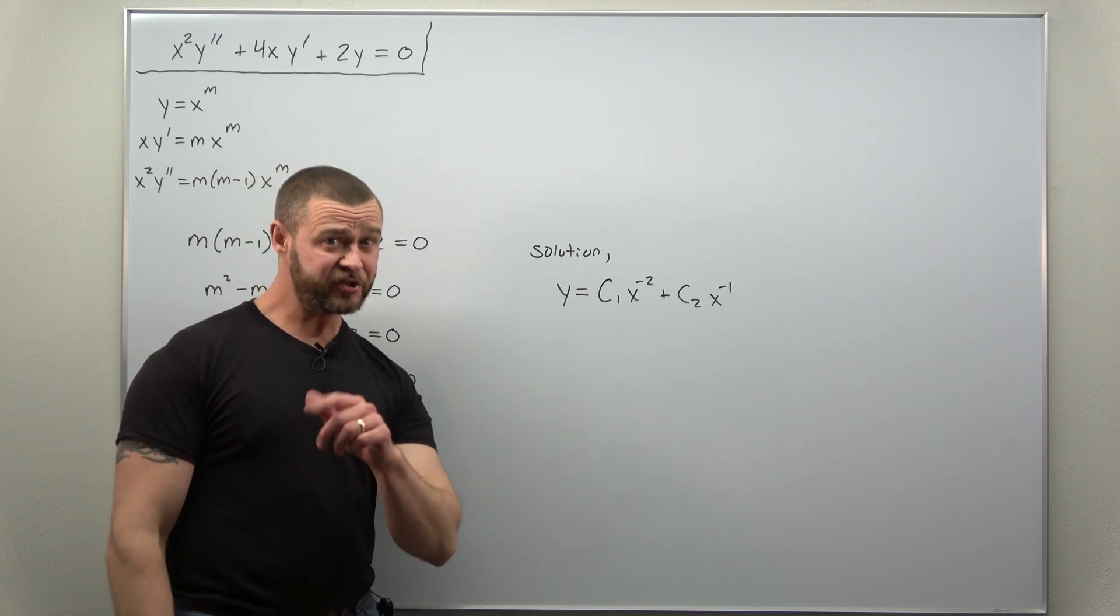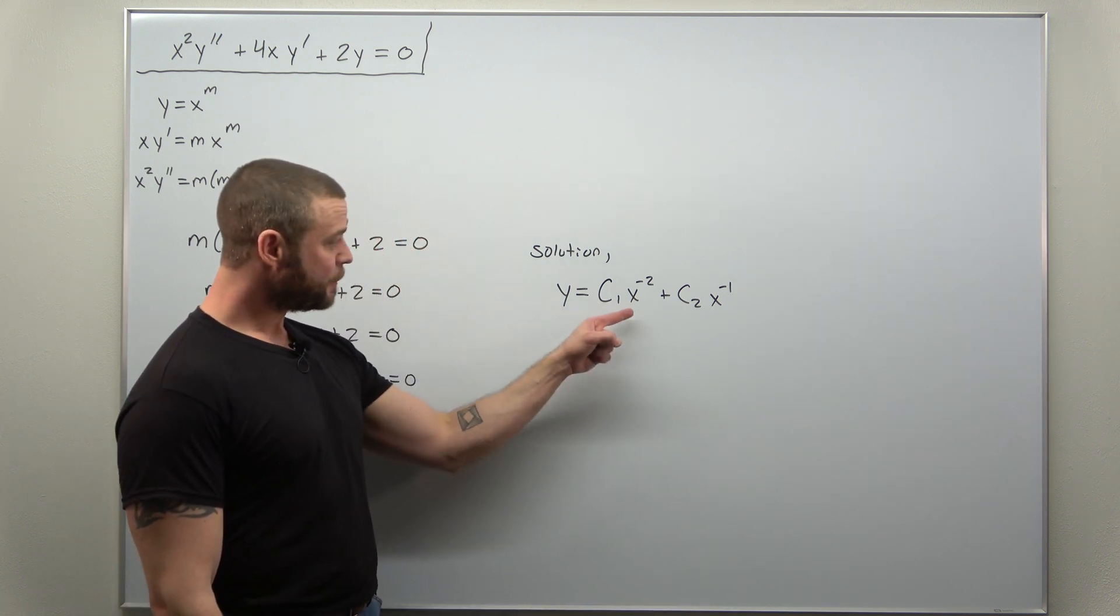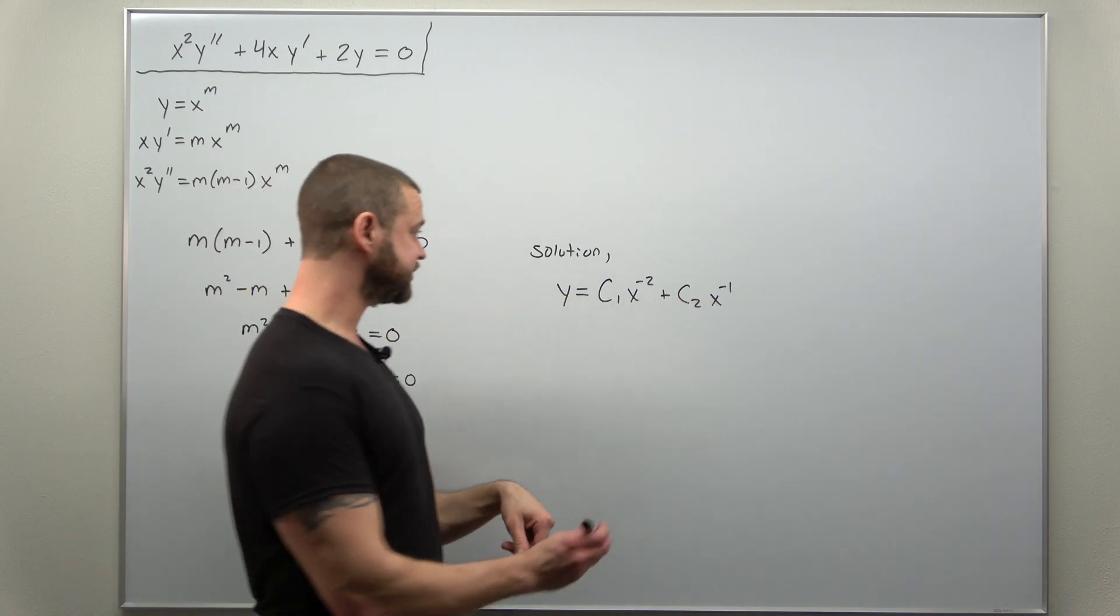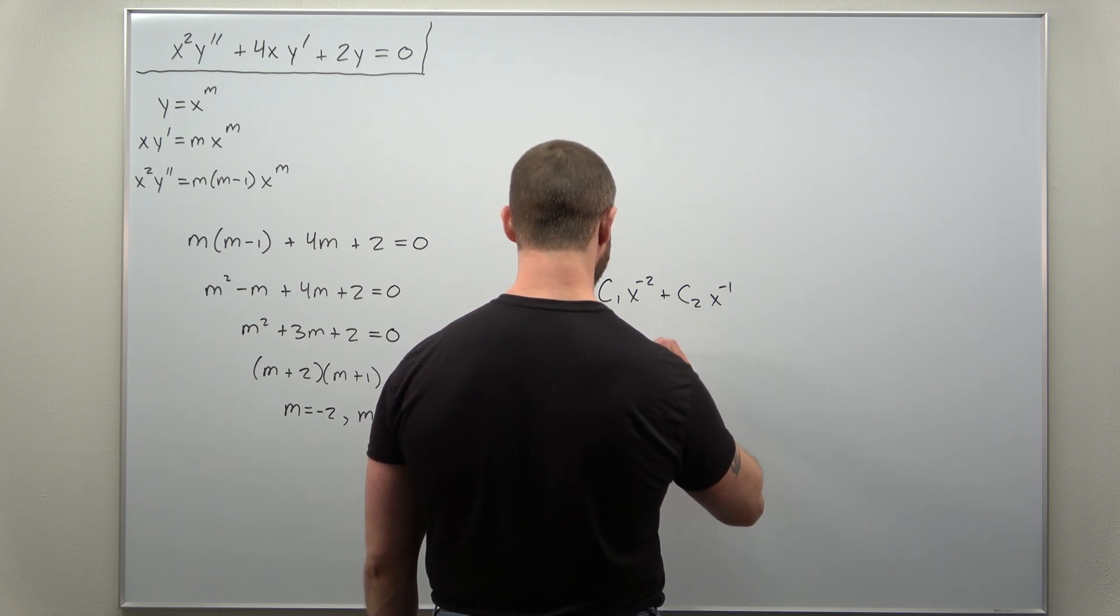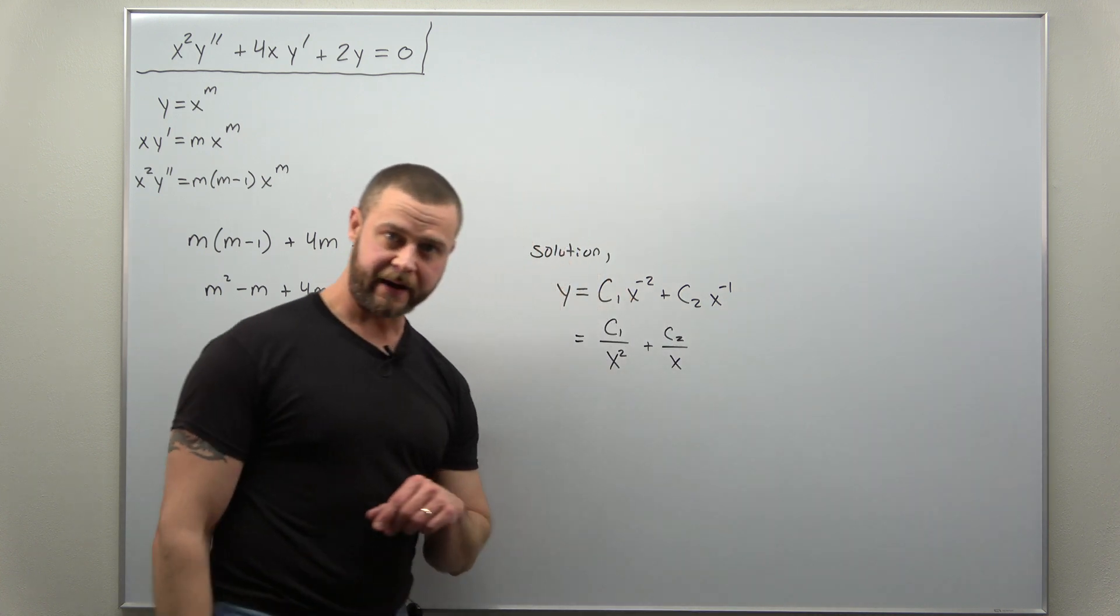The only other thing I'll mention for this problem: some books and resources might write those negative powers as 1 over powers of x, so this is the same thing as c1 divided by x squared plus c2 divided by x.